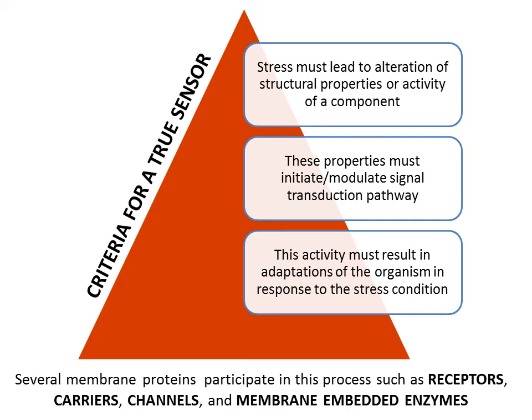If we are trying to study a sensor X and we cause a loss-of-function mutation in its gene, then perhaps the cell will give that function to some other protein. This is called functional redundancy, where the function is shared by several components. In that case, the actual function of the sensor is not identified easily.